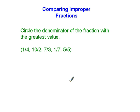We're going to compare improper fractions. You're going to see some directions that look like this: circle the denominator of the fraction with the greatest value. Sometimes it might say what here? It says greatest value? Least, good, least value sometimes. So they're going to have some fractions.